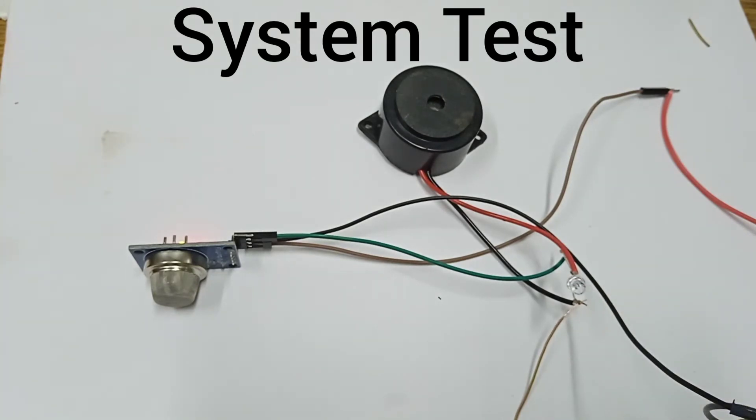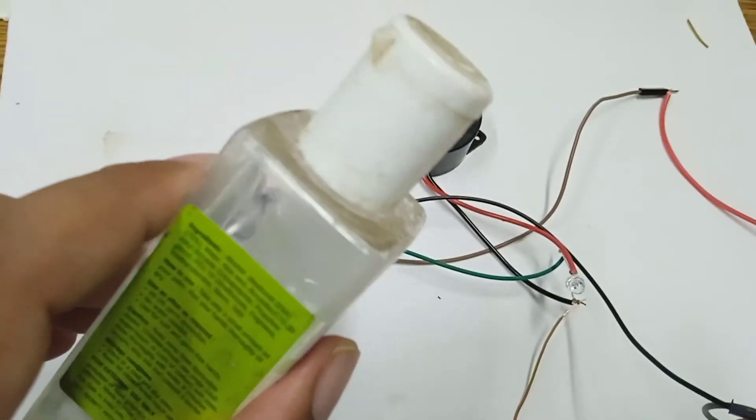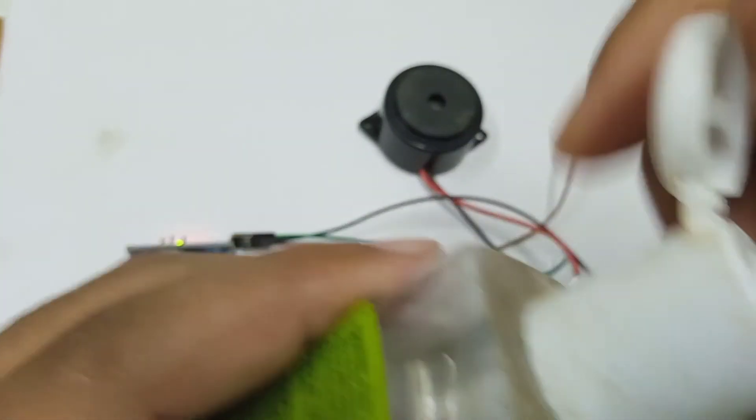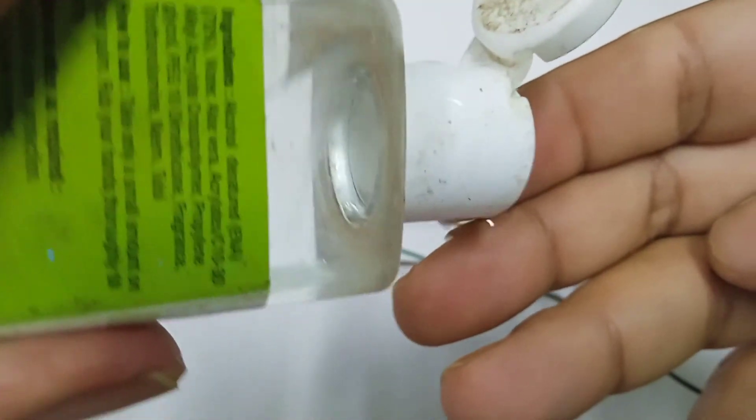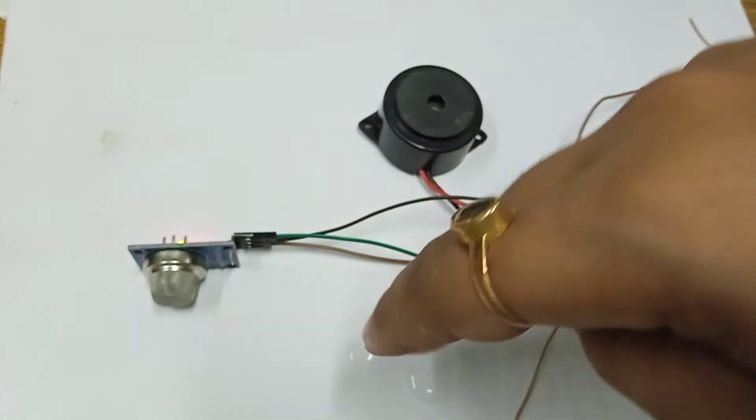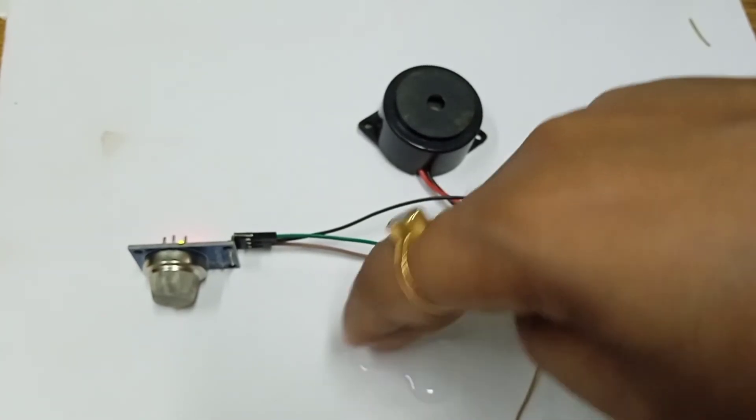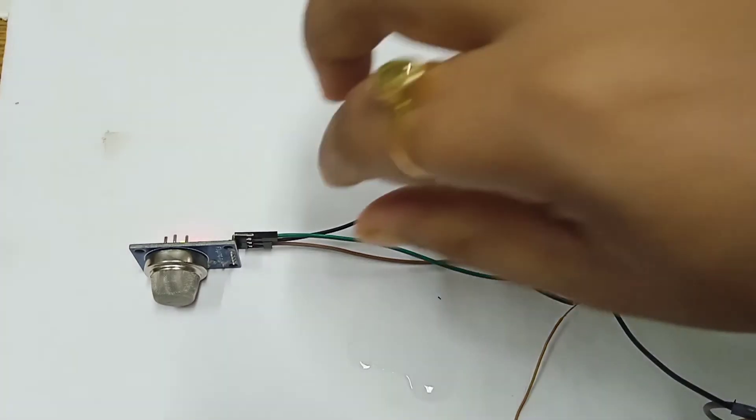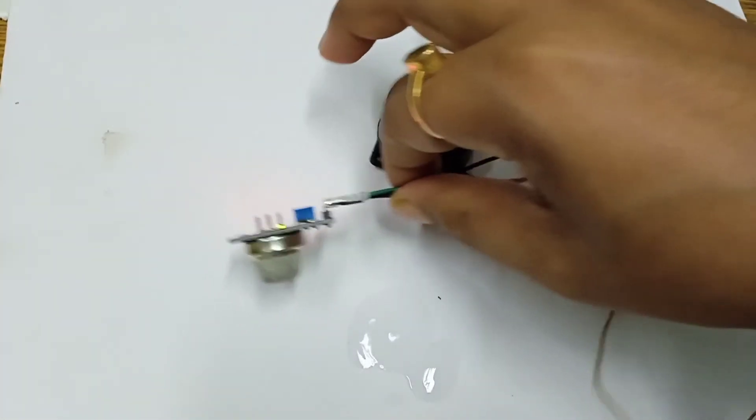I have one hand sanitizer. So what I will do, I will use this hand sanitizer. You know that some alcohol content will be there in the hand sanitizer. So I put this hand sanitizer in this portion and now I bring this sensor near to it so that after some time the alarm should start.